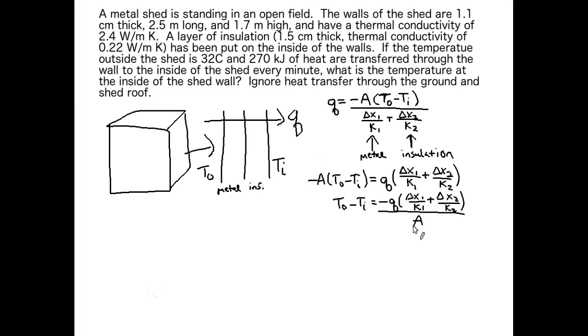The last step to get tᵢ by itself is to subtract t₀. When you do this you're going to end up with minus tᵢ equals minus that q term minus t₀. And since we have all those minus signs let's just multiply by another minus sign to get rid of them all. That will turn everything positive.